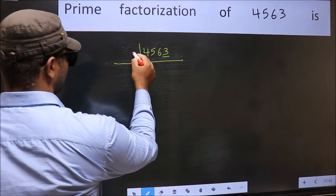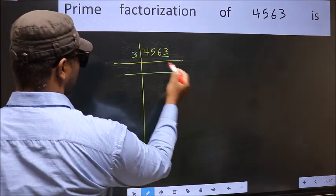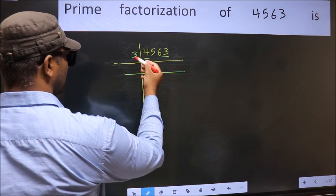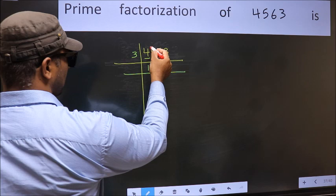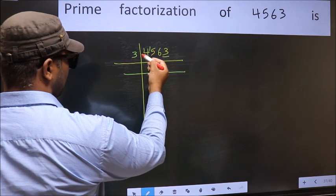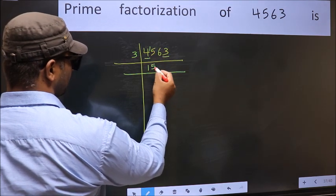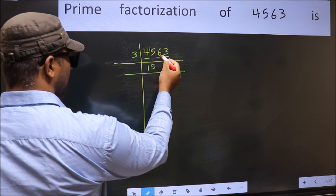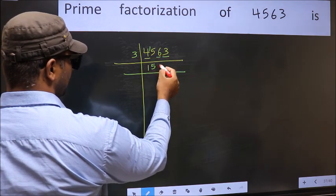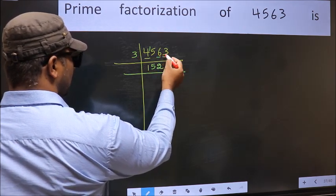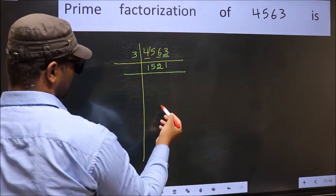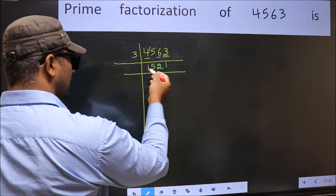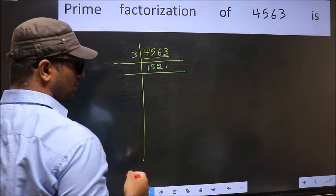So you take 3 here. First number 4. A number close to 4 in the 3 table is 3 times 1 is 3. 4 minus 3 is 1. 1 carried forward, 15. When do we get 15 in the 3 table? 3 times 5 is 15. The other number 6. When do we get 6 in the 3 table? 3 times 2 is 6. The other number 3. When do we get 3 in the 3 table? 3 times 1 is 3. Now to check whether it is divisible by 3 or not.